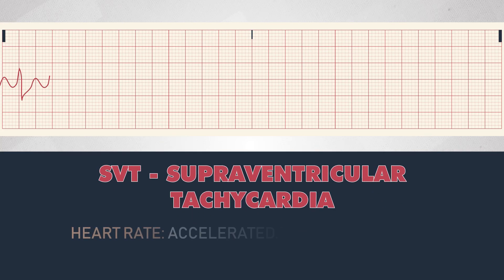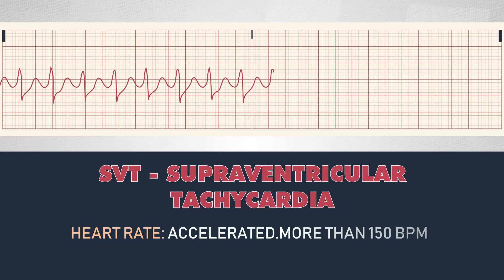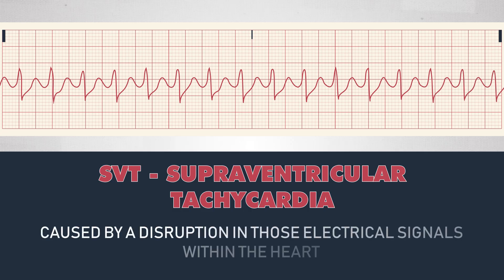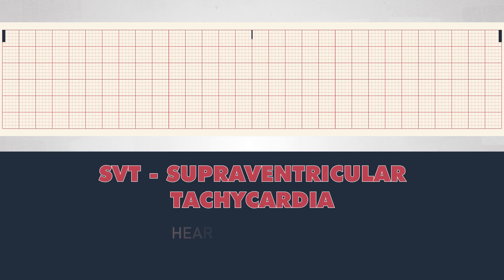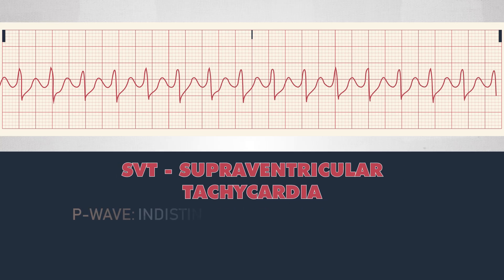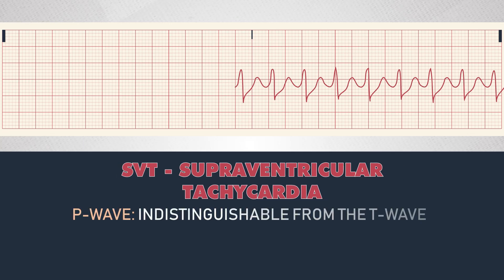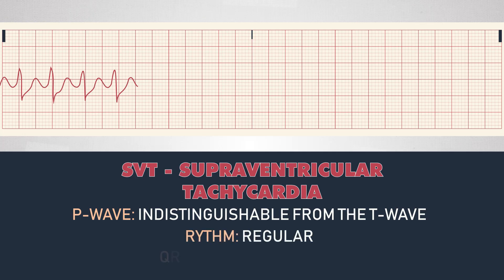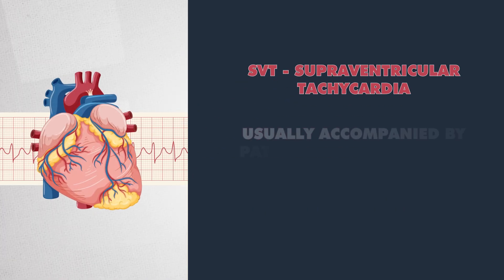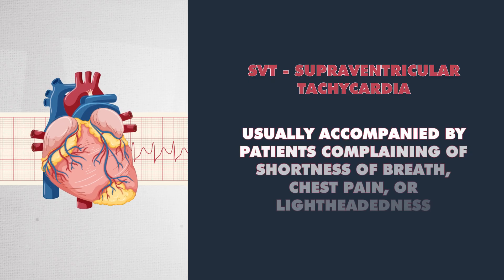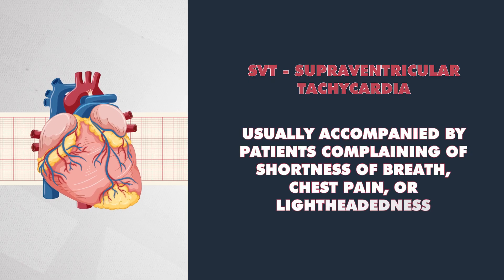SVT is an accelerated heart rate of more than 150 beats per minute, caused by a disruption in the electrical signals within the heart. We have 16 R waves here, which equals 160 beats per minute. As you can see in the example, the P wave is not distinguishable from the T wave. The QRS is narrow and regular, but this is usually accompanied by patients complaining of shortness of breath, chest pain, or lightheadedness.